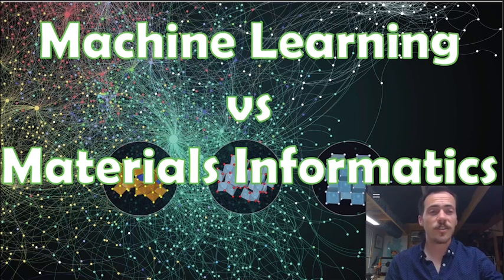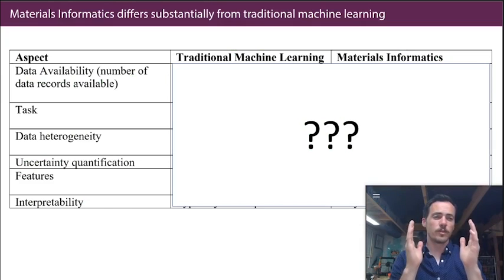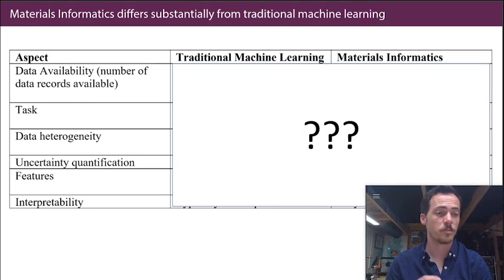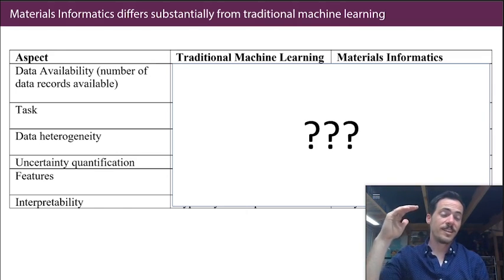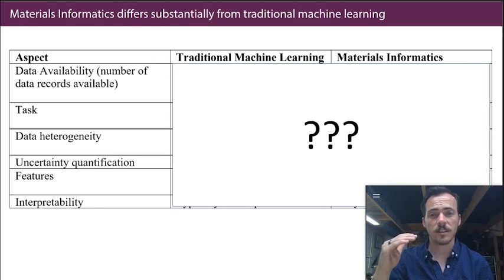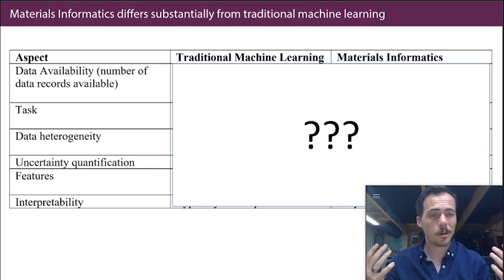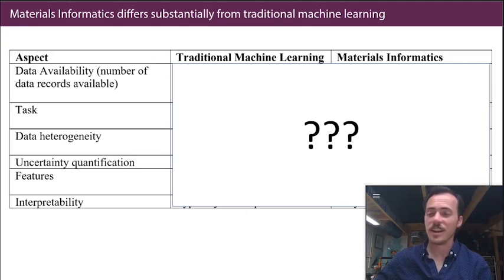I think that there are some unique things we ought to consider. When you compare traditional machine learning versus materials informatics, let's consider the following: data availability, the task that you're trying to do, data heterogeneity, uncertainty quantification, features, and interpretability. If they're all the exact same, then just go to your nearest Coursera course on machine learning. But I think there are some differences here, so let's dive into them.